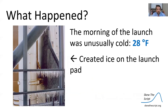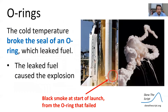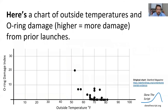Much has been discussed about what happened on the Challenger. Most importantly, the morning of the launch was unusually cold — 28 degrees Fahrenheit — and it created ice on the launch pad, as you can see here. NASA decided to proceed with the flight anyway. What happened was that O-rings, which are seals that fit the rocket together, broke in the cold temperature, they leaked fuel, and the leaked fuel caused the explosion. You can see black smoke from the O-ring failure at the start of the launch, and then the catastrophic explosion in the photo on the right.